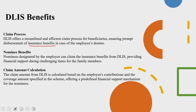The nominee benefits will get tax exemption and there will be an expeditious claim process. The claim amount for DLIS is calculated based on the employee's contribution and the coverage amount specified in the scheme. The average monthly wage and the government-defined limit of 7 lakh are used, and the DLIS benefit formula is: average monthly wage × 12 × government defined limit. The financial assistance provided by DLIS, coupled with a relatively quick claim process and tax exemption for nominees, can offer solace and financial support during difficult times.